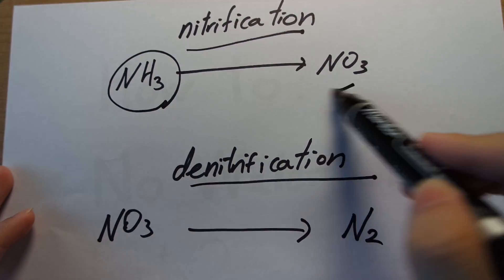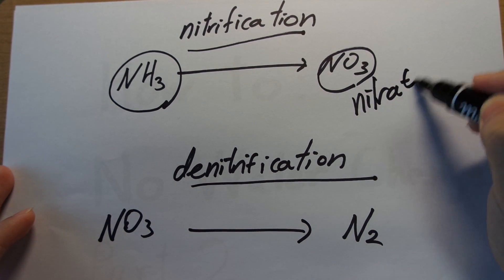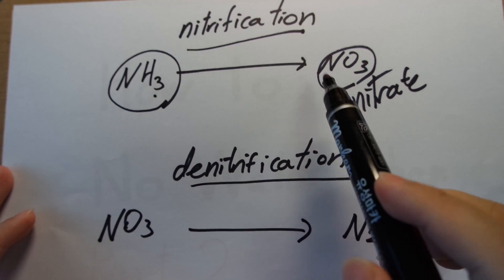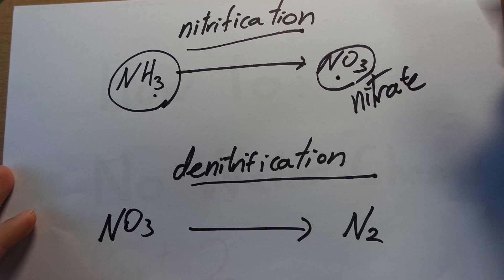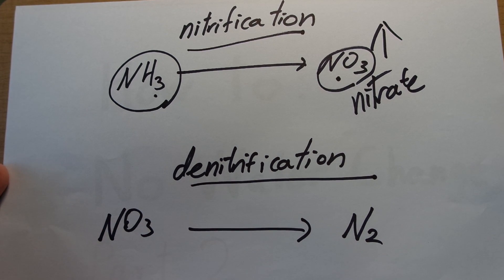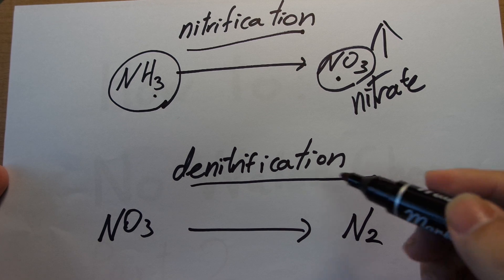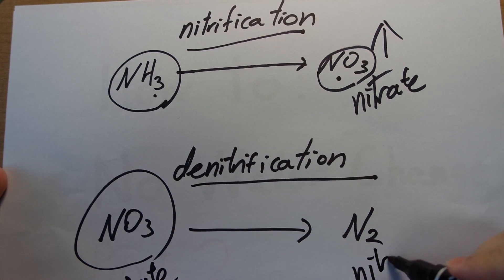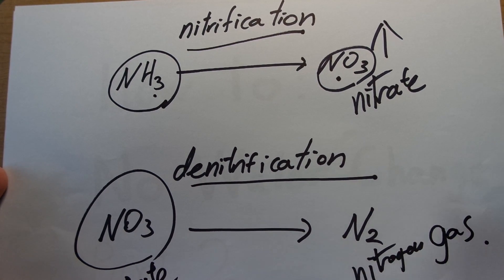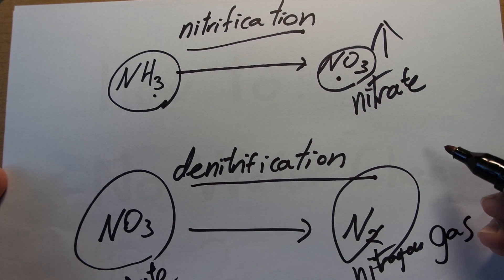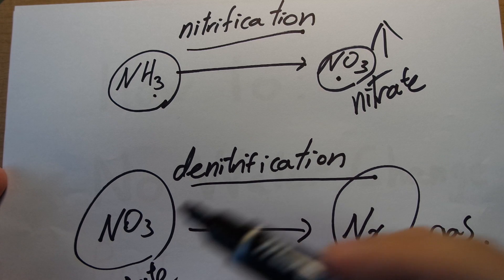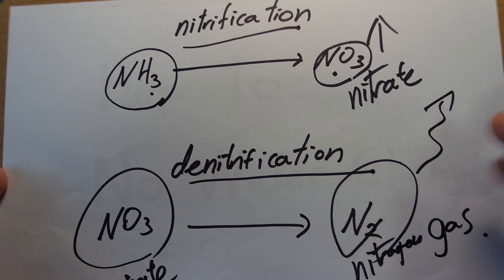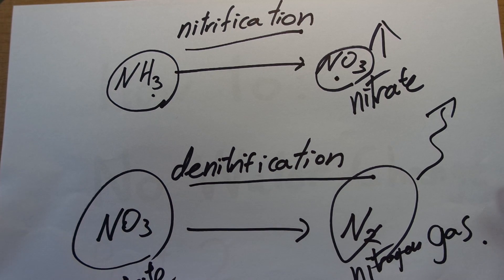Everyone knows what nitrification is — it's getting rid of ammonia and turning it into nitrate. This is a process whereby something with high toxicity is turned into something with very low toxicity. But everyone knows this stuff builds up and that means you have to do water changes. Denitrification is the process of turning those nitrates into nitrogen gas, which makes up 70% of the atmosphere — it's N2. If you can turn the nitrate dissolving in your water into a gas, it's just going to fly away into the atmosphere and be gone from your tank.